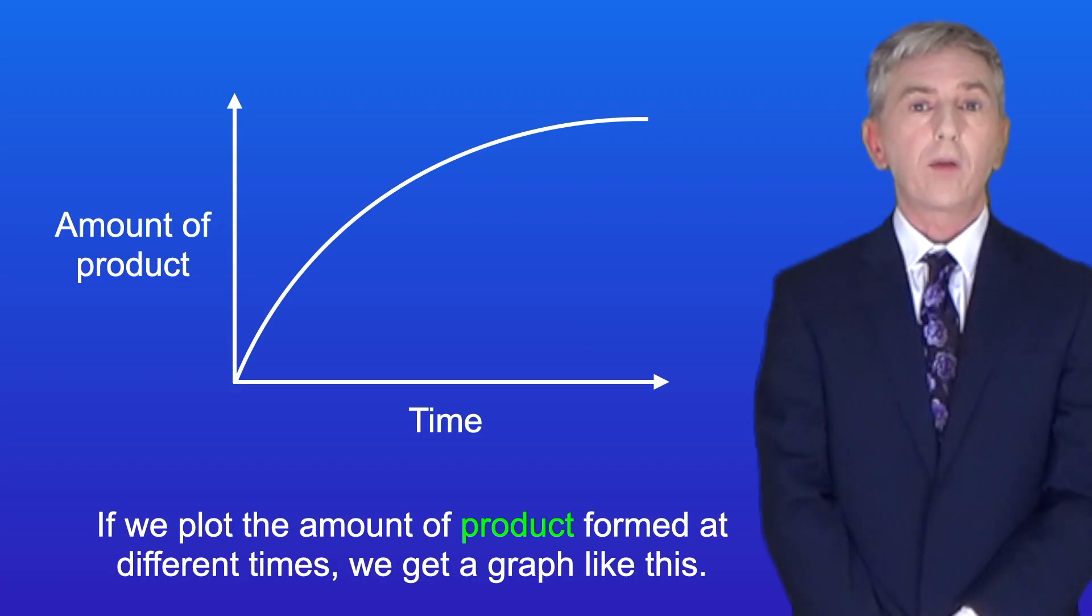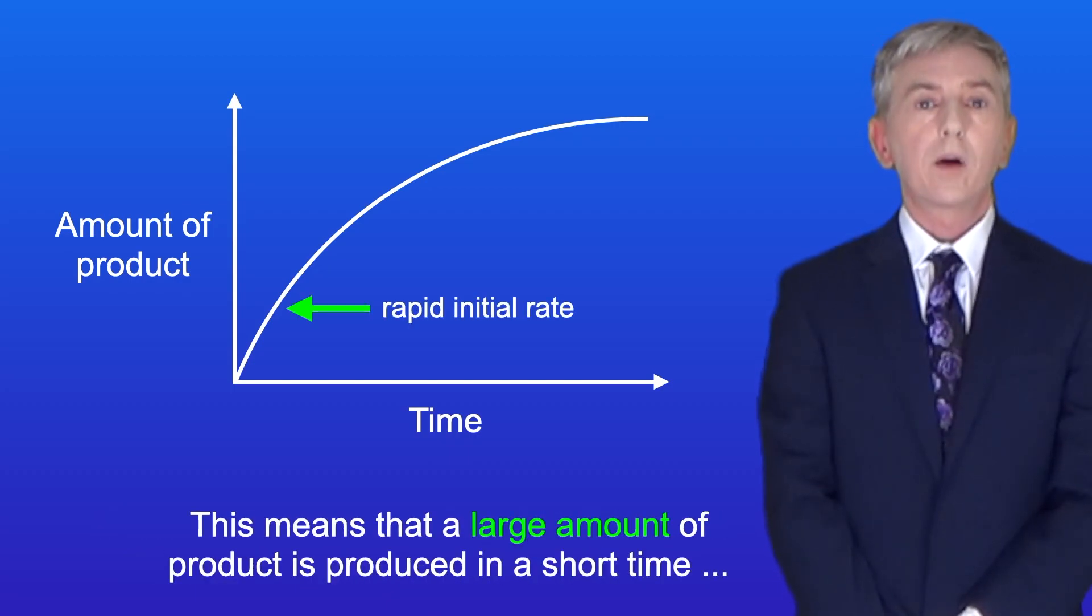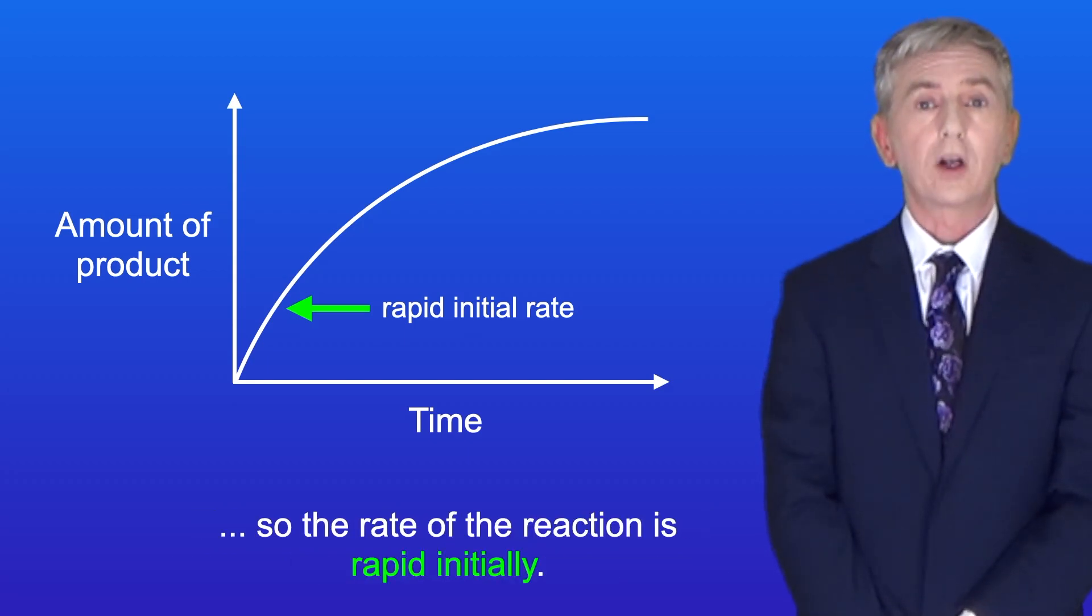Now if we plot the amount of product formed at different times we get a graph like this. As you can see at the start the line is steep. This means that a large amount of product is produced in a short time, so the rate of reaction is rapid initially.